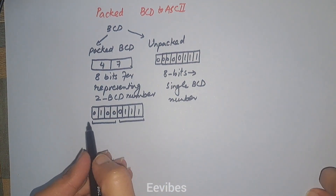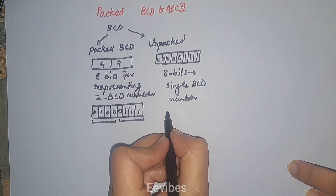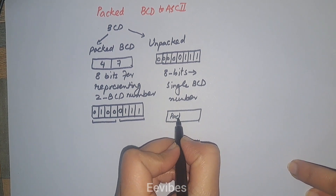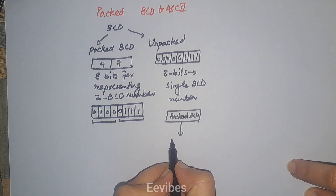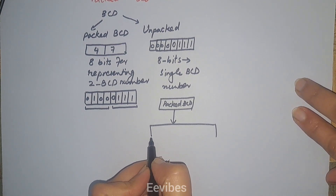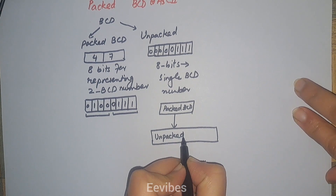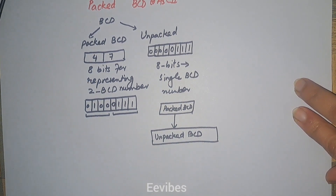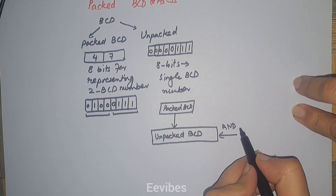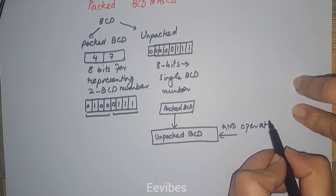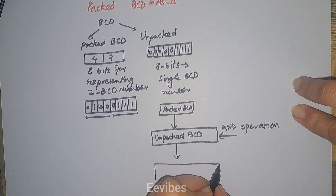Now let's see the procedure for converting a packed BCD number into ASCII. First you have a packed BCD number, then you convert it into unpacked BCD by an AND operation. Once the data has been converted into unpacked BCD, the last step is to tag them with 30 hex.